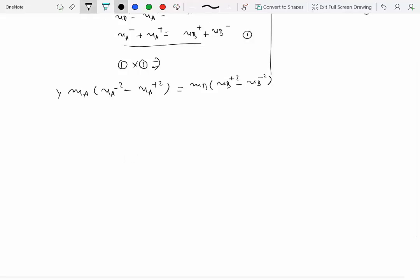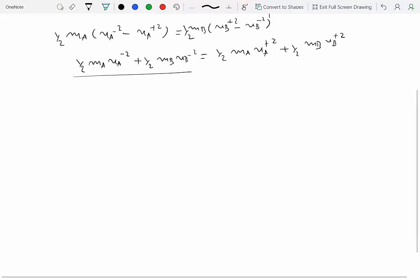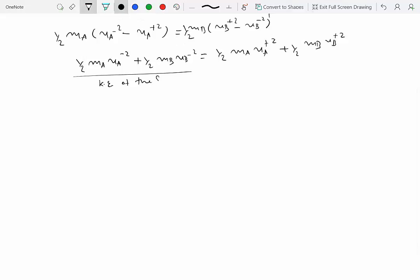This equals MB times (VB plus squared minus VB minus squared). Adding one-half in front of both sides and separating pre-impact and post-impact terms, we get one-half MA VA minus squared plus one-half MB VB minus squared equals one-half MA VA plus squared plus one-half MB VB plus squared. This is the kinetic energy of the system. The left side is the kinetic energy before impact.